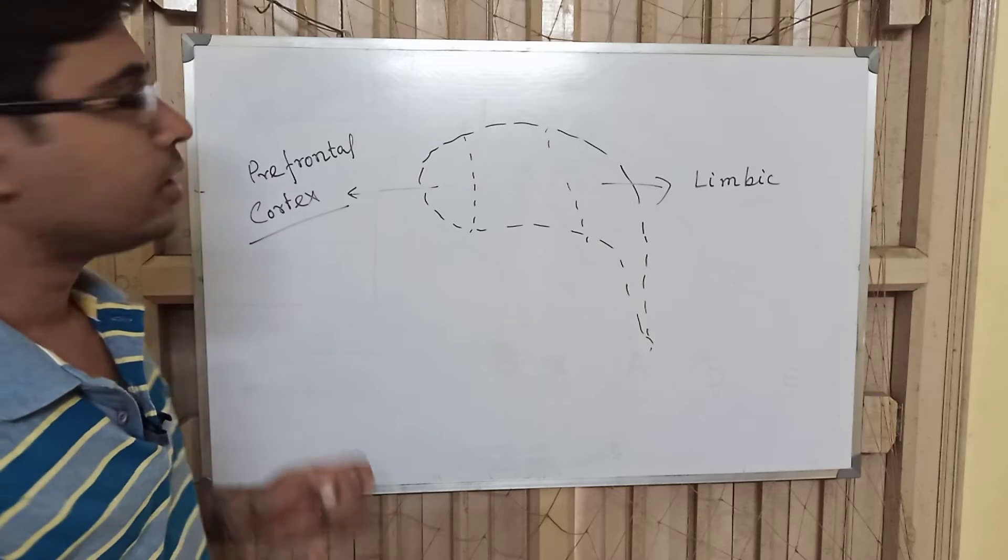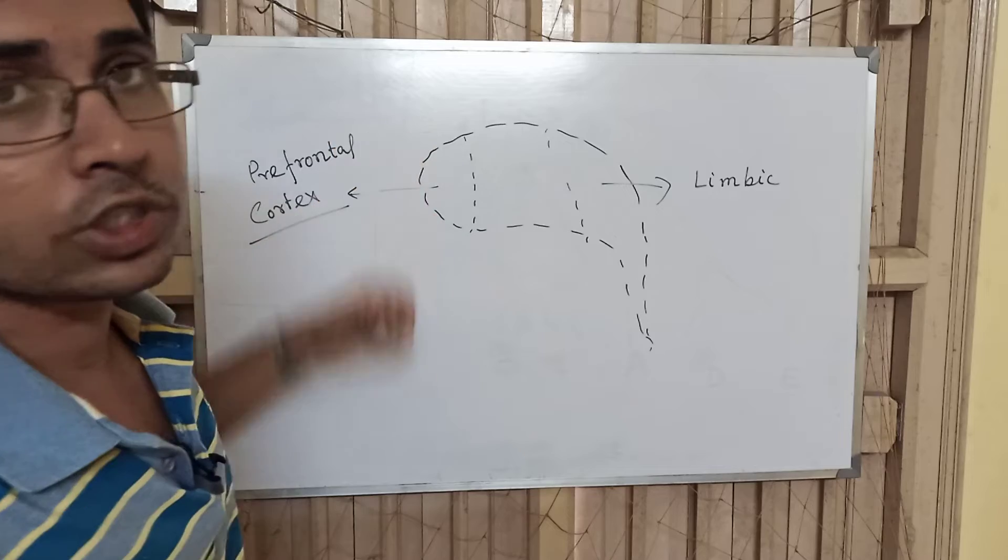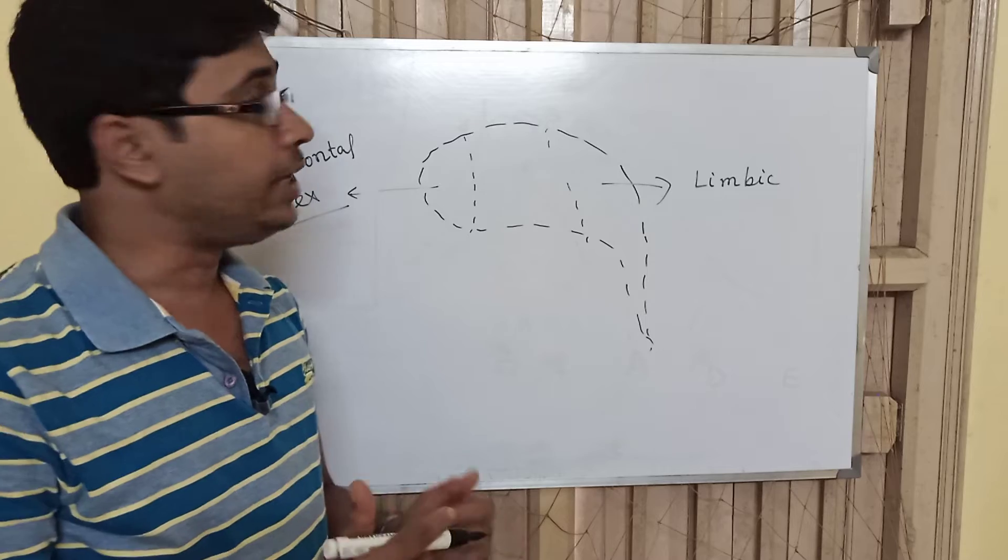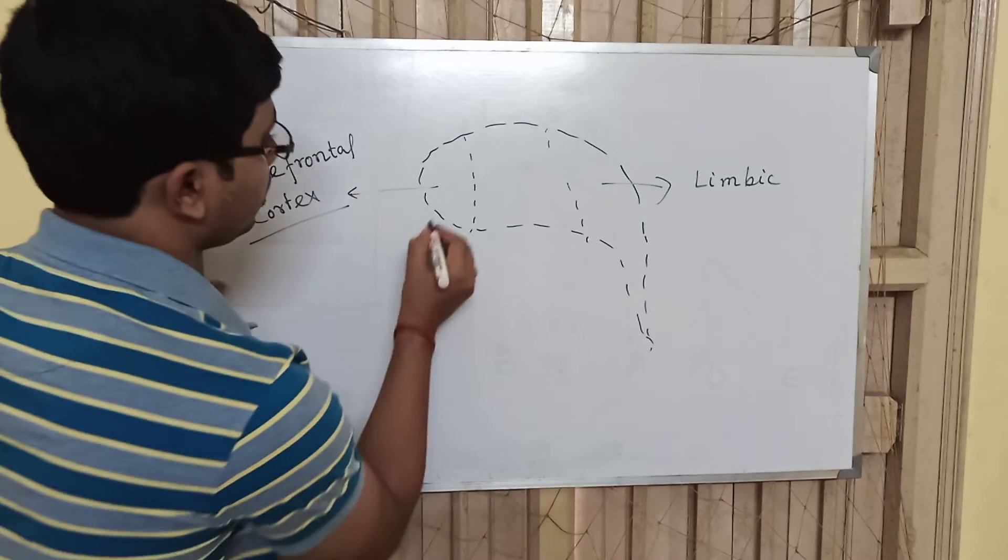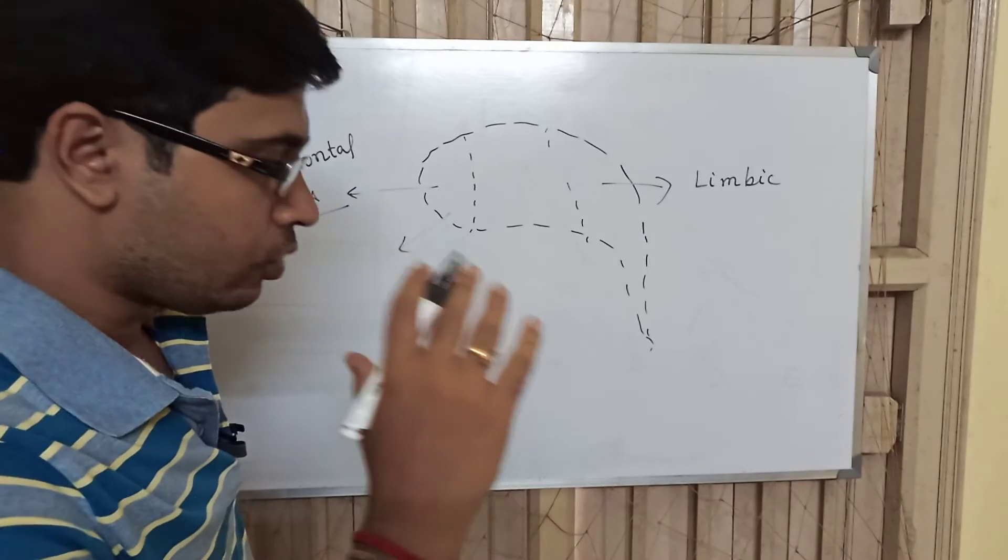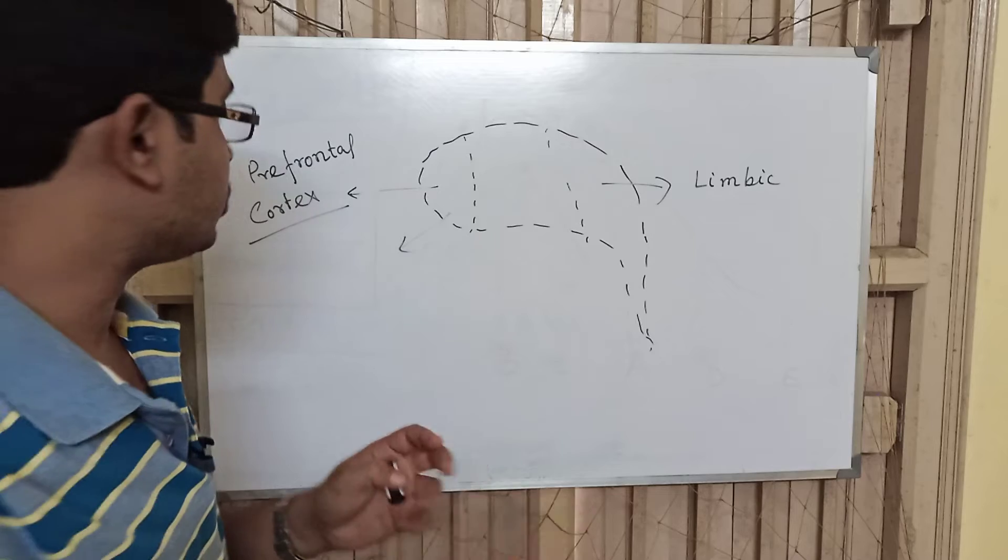First, the prefrontal cortex. It is responsible for logical action. Logical action means what is reasonable, what needs to be computed. It is responsible for what is reasonable, the action that needs to be performed.